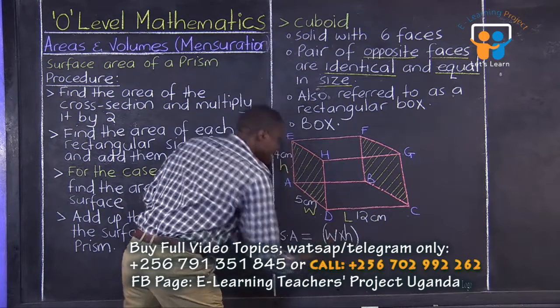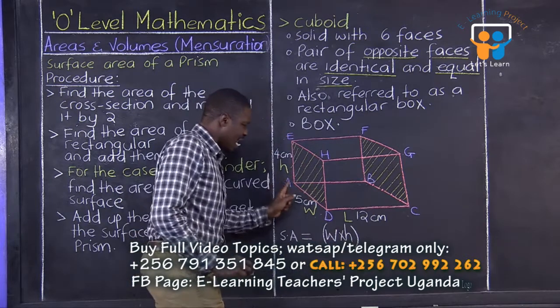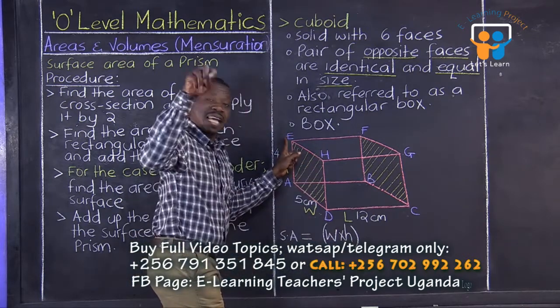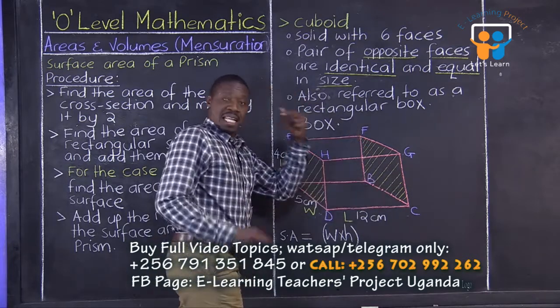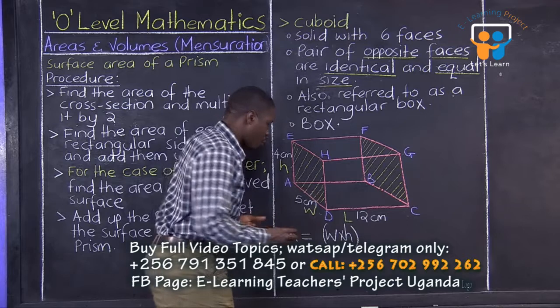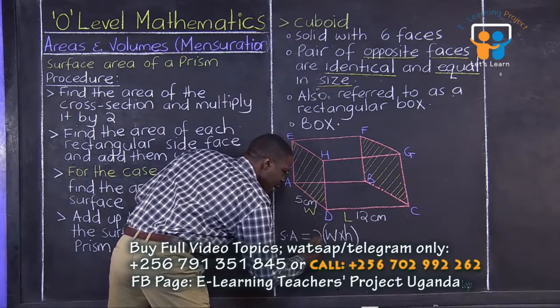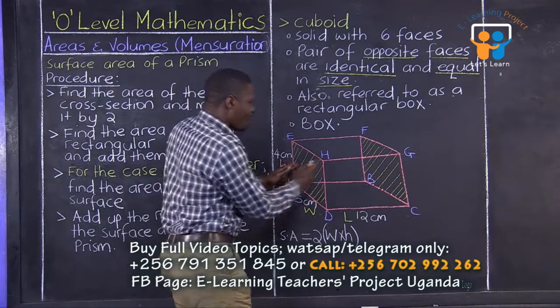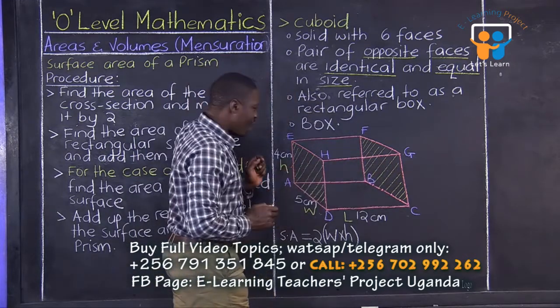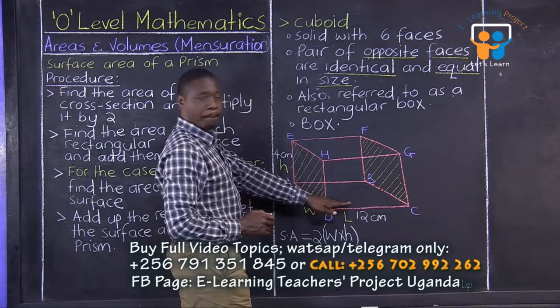But after that, since this ADHE is identical to BCGF, the areas are the same. We multiply it by 2. Then we go ahead. We are done with the shaded parts. Now, let us get the top and the bottom.